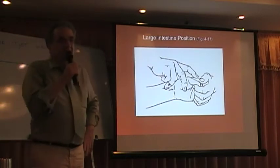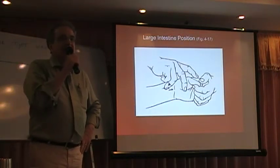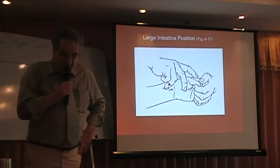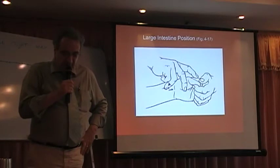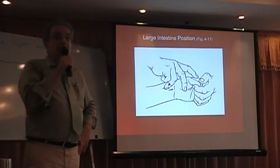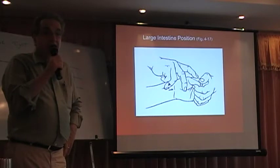Now we can talk about qualities. Common qualities are: tense, tight, and slippery. Tense indicates qi stagnation with some heat.